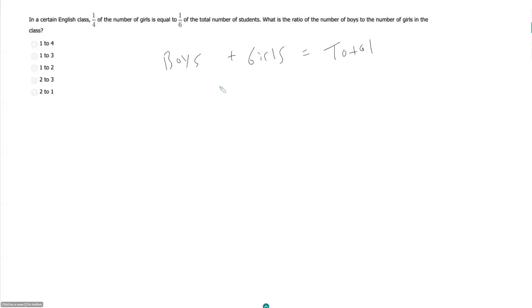And then let's fill in what they give us. So they say one-fourth the number of girls, so one-fourth of G, is equal to one-sixth of the total.